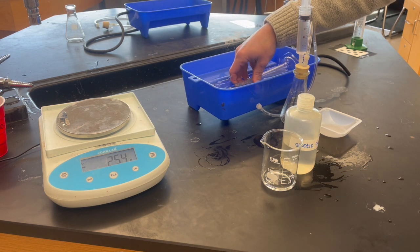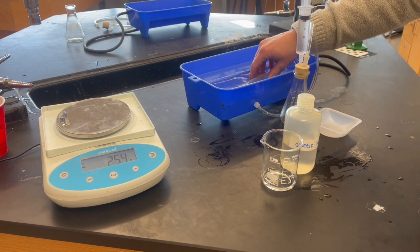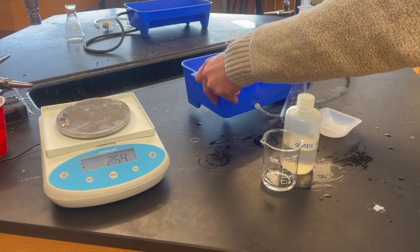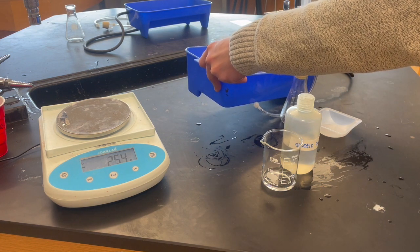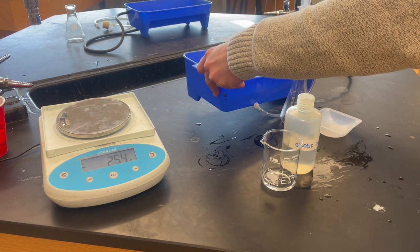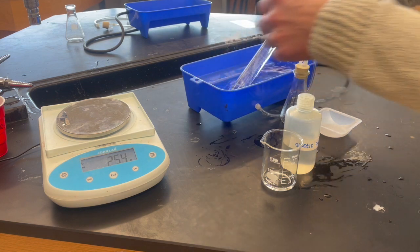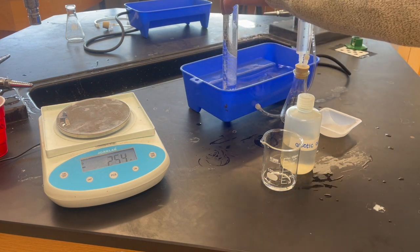Next I take the graduated cylinder and completely fill it all the way up to the top with water, and then I'm going to invert it upside down so that I can collect the gas that is escaping from the reaction between vinegar and baking soda.